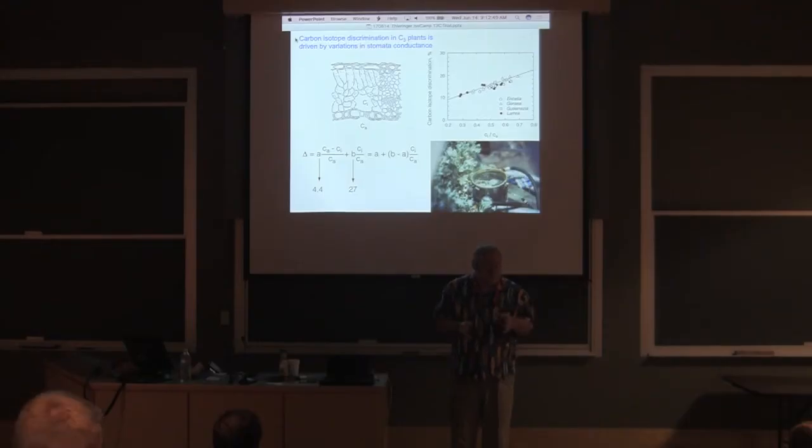So that 10 would be analogous to about a minus 18 and the 20 would be analogous to a minus 28 in carbon isotope ratio. Going from a positive to a negative. So going back to the original question, what's the difference between acclimation and adaptation?